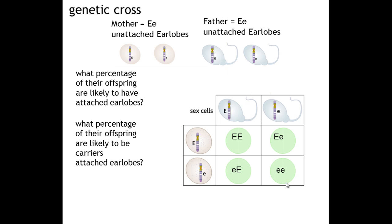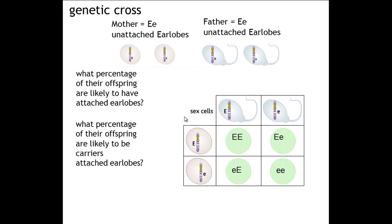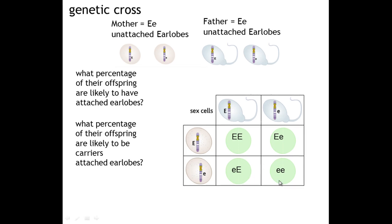This shows the different possibilities that are available. Possibilities is a really key term here, because by chance you would expect a one in four chance for the offspring to have the homozygous dominant genotype, a one in two chance to have the heterozygous genotype, and a one in four chance to have the homozygous recessive genotype. The overwhelming outcome should be an unattached earlobe, because in three of the four cases that is what the genotype indicates.